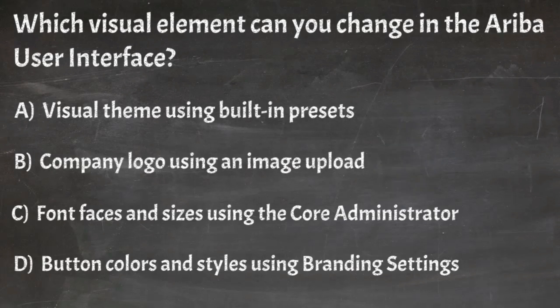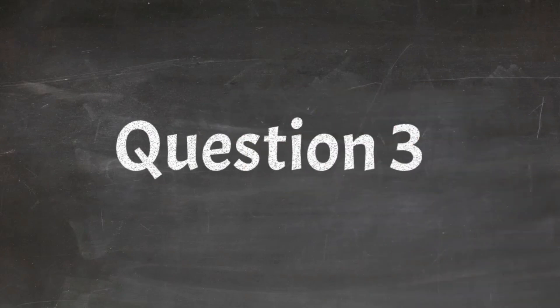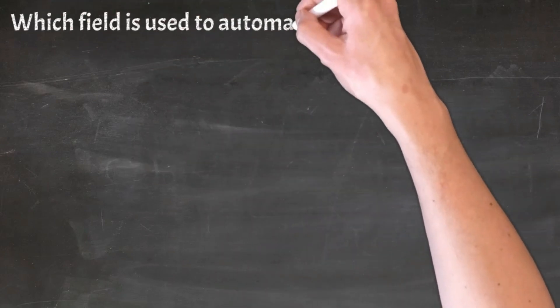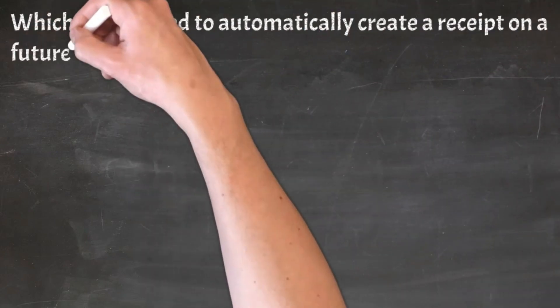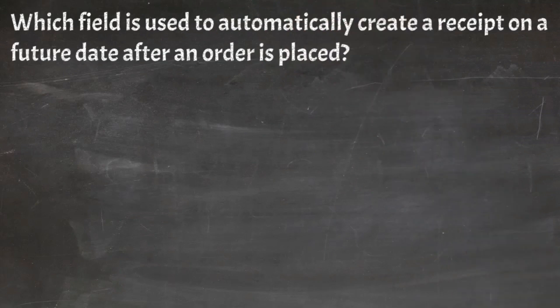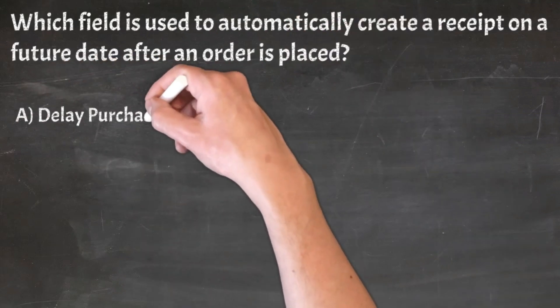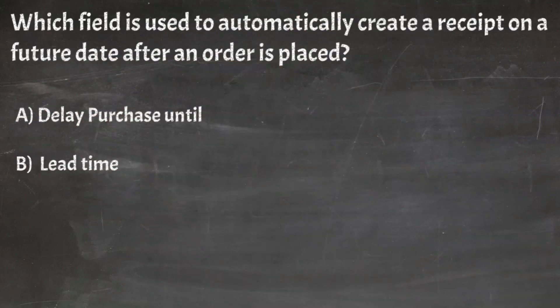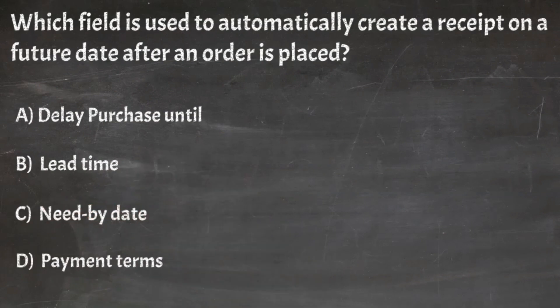Correct answer: A. Visual theme using built-in presets. Question 3: Which field is used to automatically create a receipt on a future date after an order is placed? A. Delay purchase until, B. Lead time, C. Need by date, D. Payment terms.